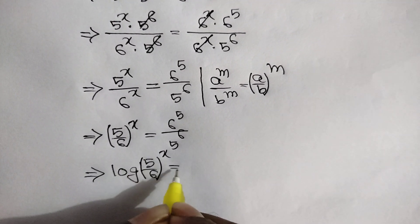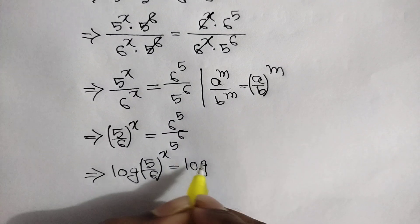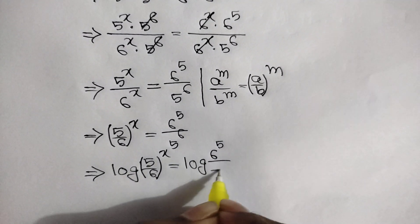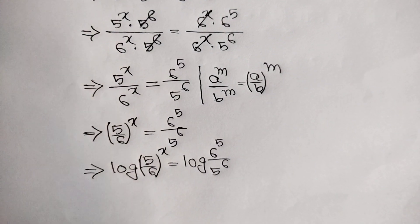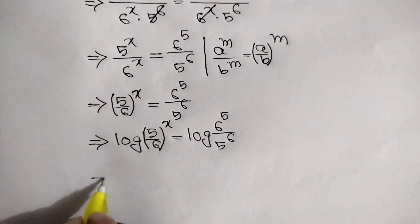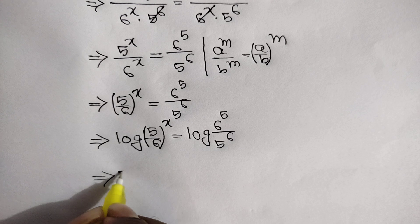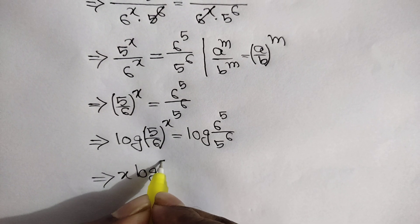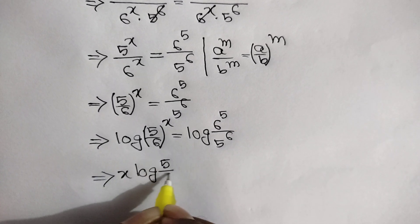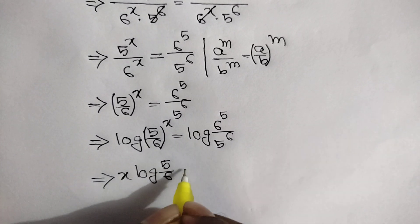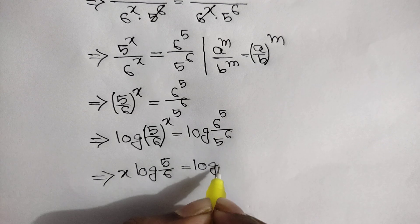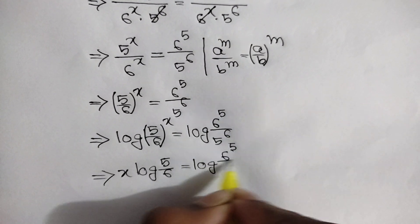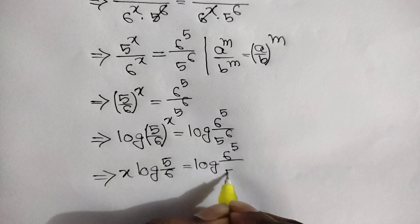Taking logarithm of both sides: x log 5 over 6 is equal to log of 6 to the power 5 over 5 to the power 6.